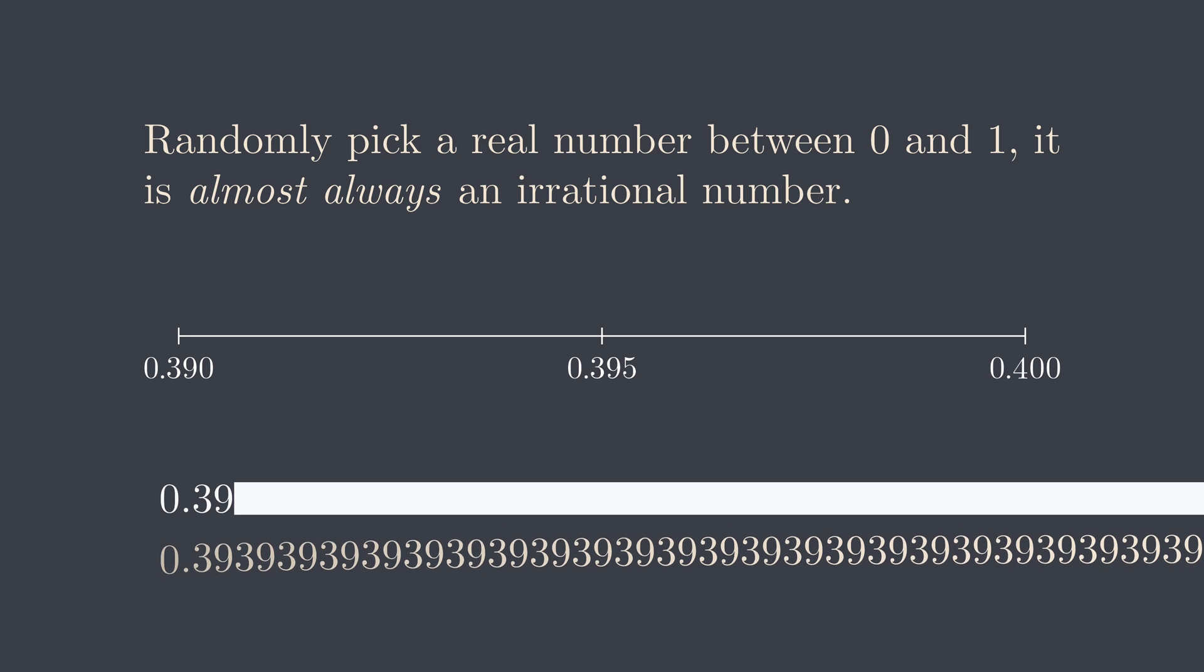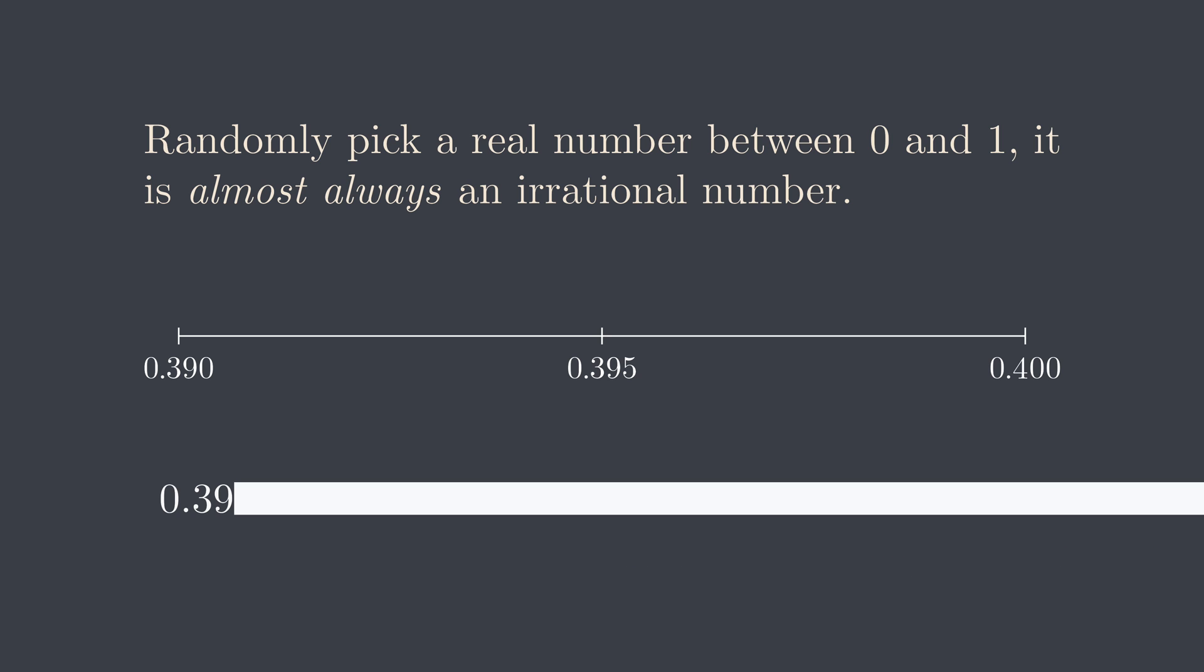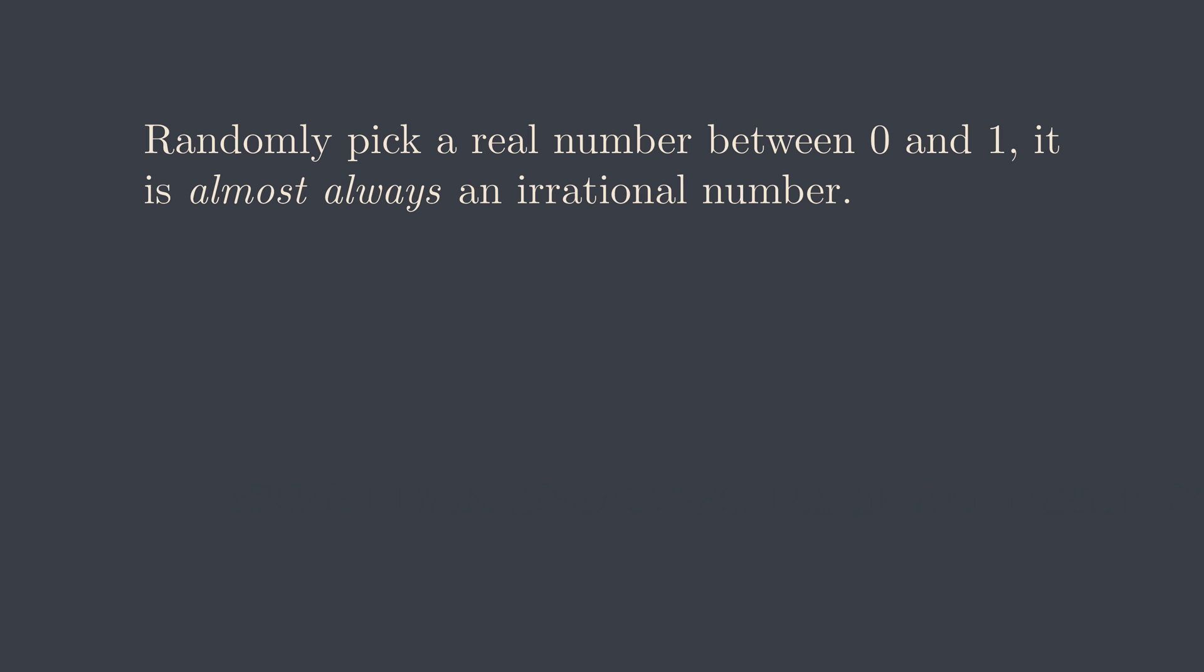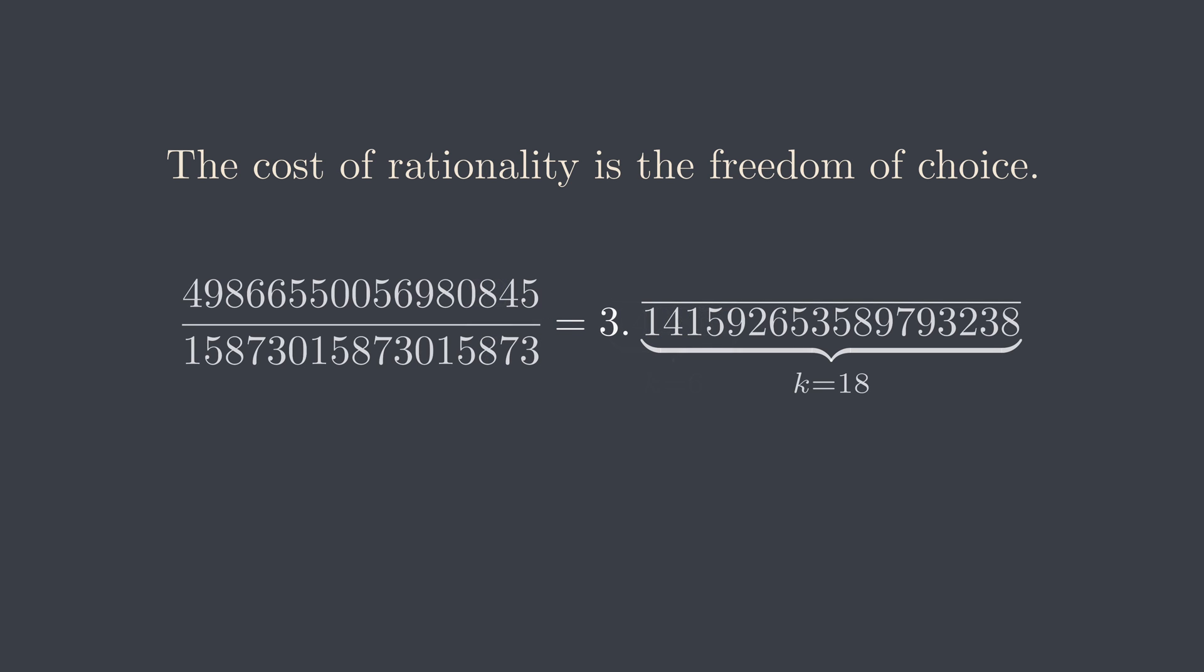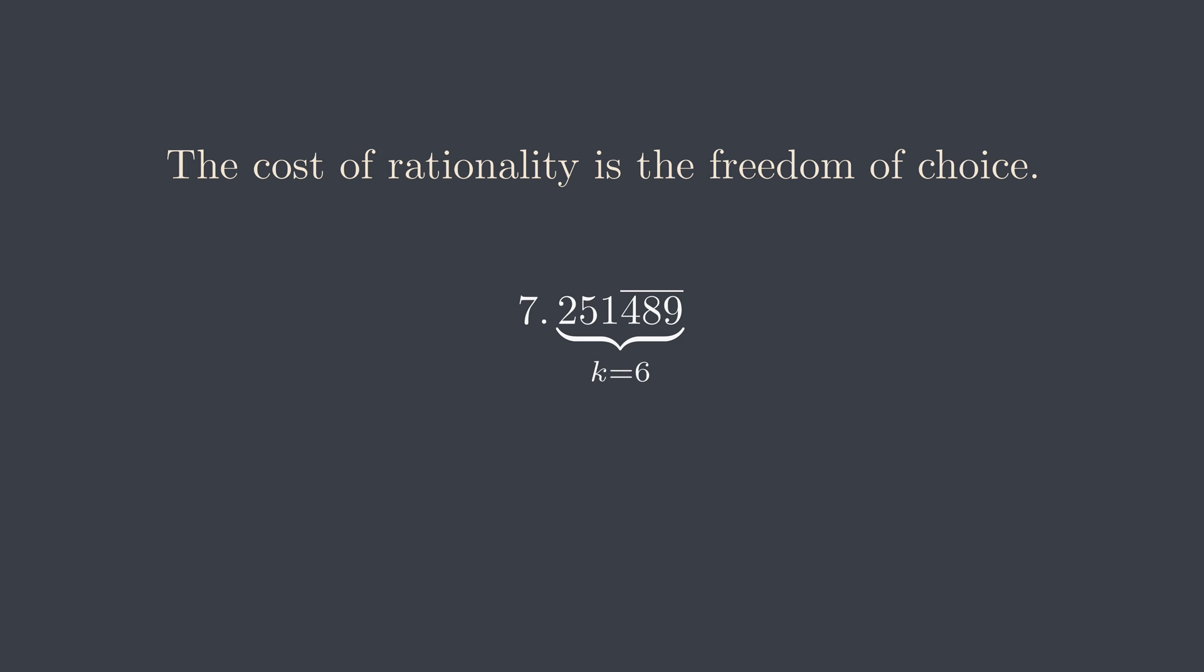What is the moral of the story? Well, being rational has a cost. You lose the freedom of choice. If you are a rational number, you can delay the revelation of your identity for as many digits as you want. But after a certain point, you are no longer random, you are completely fixed.